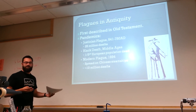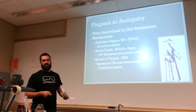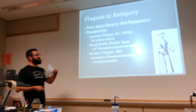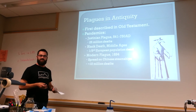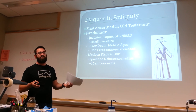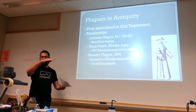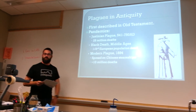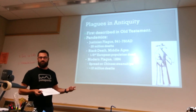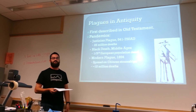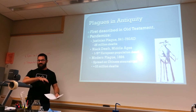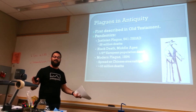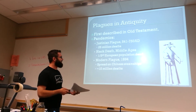It was first described in the Old Testament. The earliest pandemic we can confirm is the Justinian Plague, which affected the Byzantine Empire and killed about a third of it. The second huge pandemic was the Black Death of the Middle Ages, killing 30 to 50 percent of Europe's population. Then the modern plague, discovered by Yersin in Hong Kong, spread on Chinese steamships — 10 million people died as it spread worldwide. Luckily, antibiotic therapy has really helped suppress bubonic epidemics and pandemics.